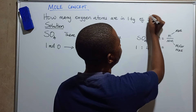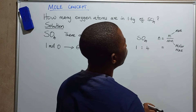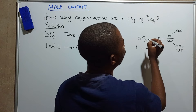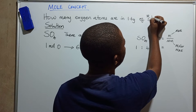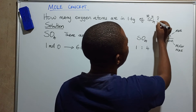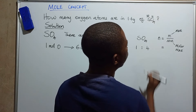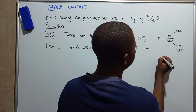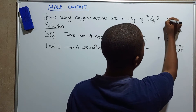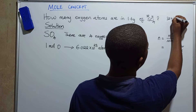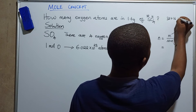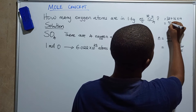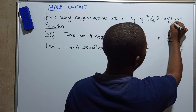The molar mass is the sum of the relative atomic masses in sulfur trioxide. Sulfur has a relative atomic mass of 32, and oxygen has a relative atomic mass of 16. So the molar mass is 32 plus 16 times 4, which gives us 32 plus 64, equal to 96 grams per mole.